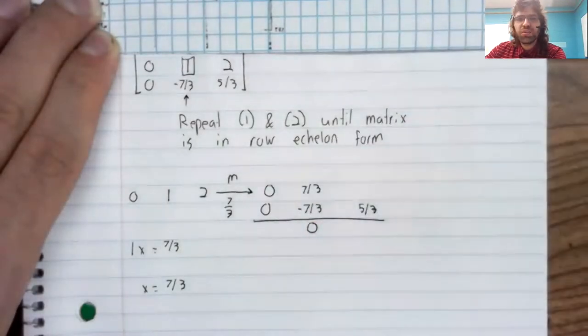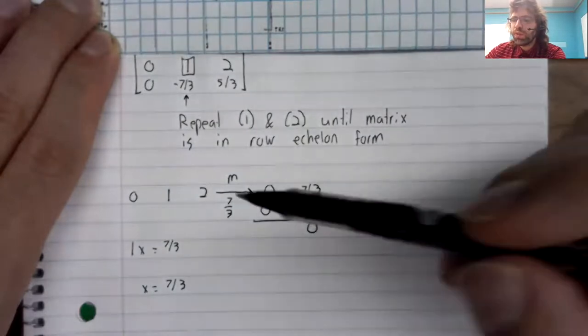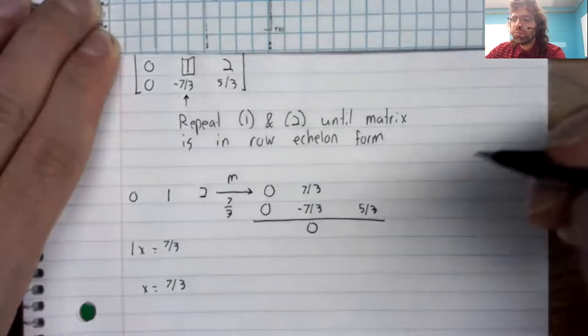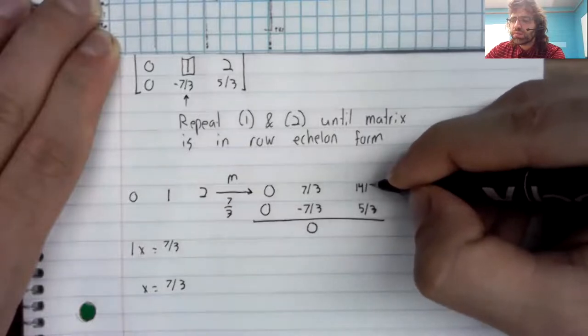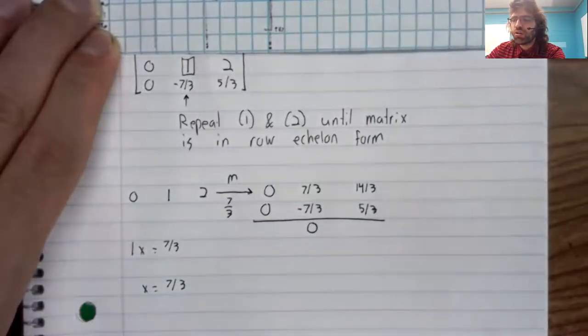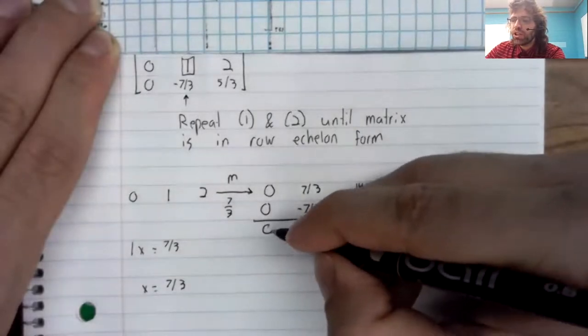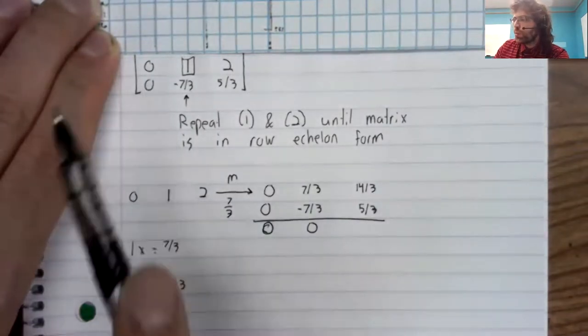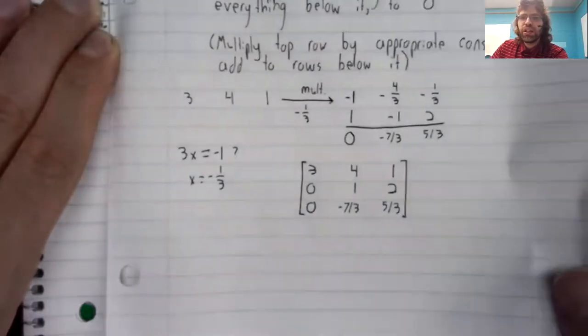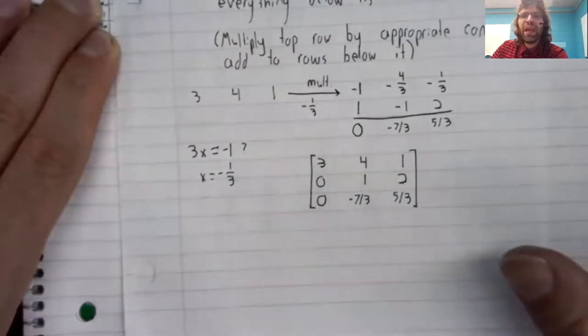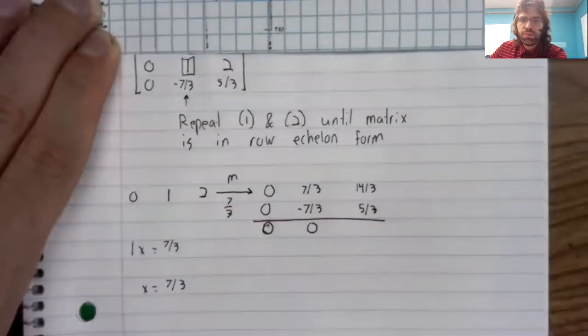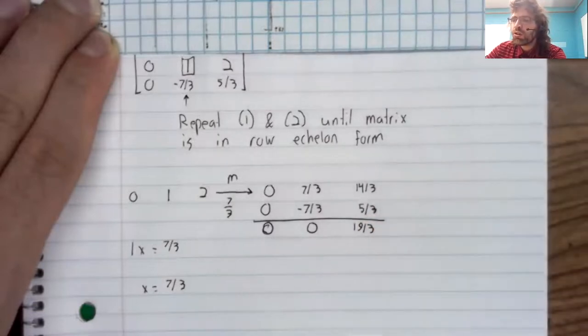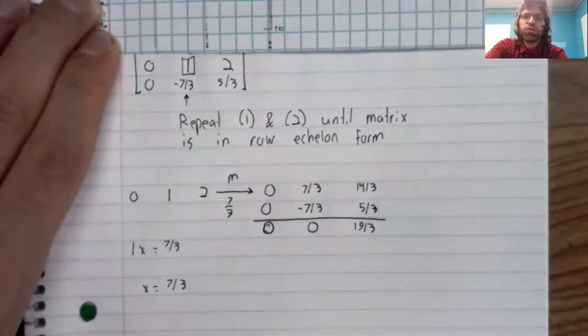Zero times seven thirds is zero. One times seven thirds is seven thirds. Two times seven thirds is 14 thirds. We do the addition. Notice that this is zero, which we got in an earlier step remains zero. Here we have 19 thirds. And this is our new third row.